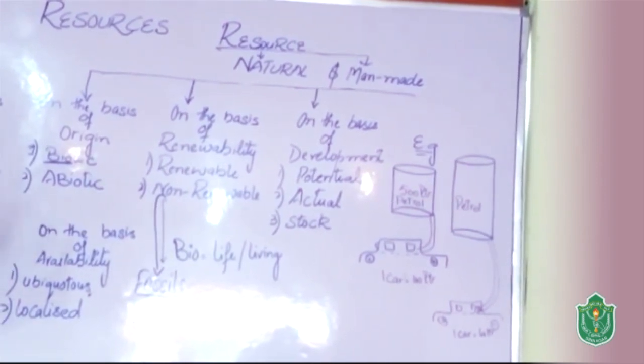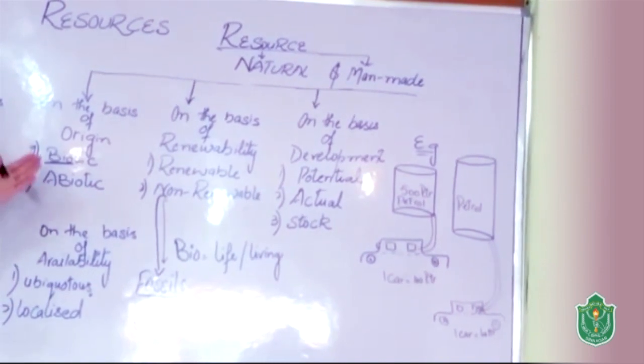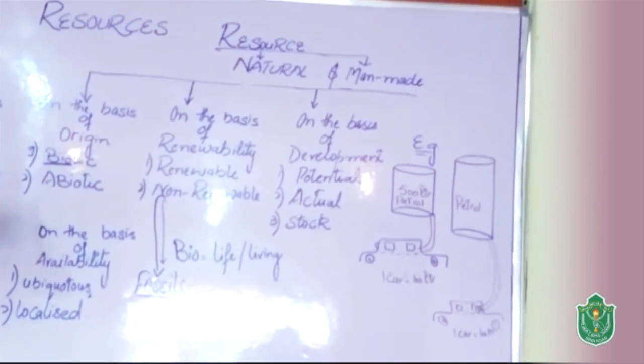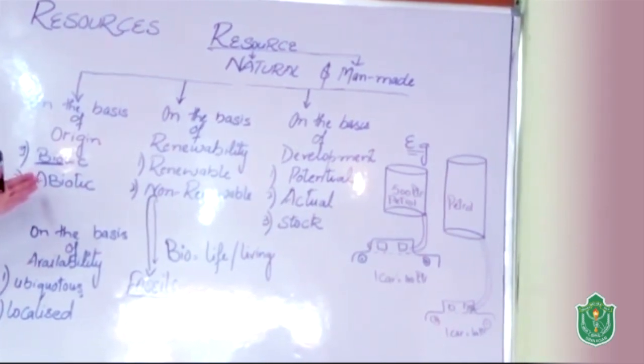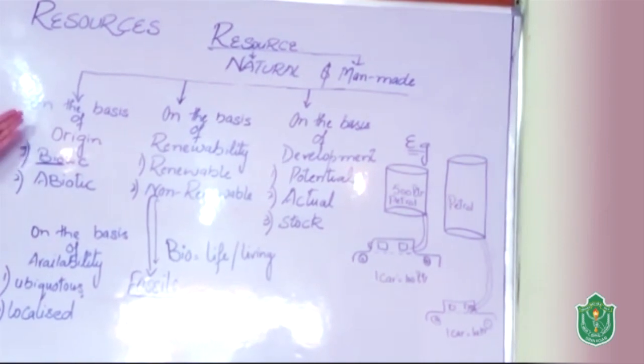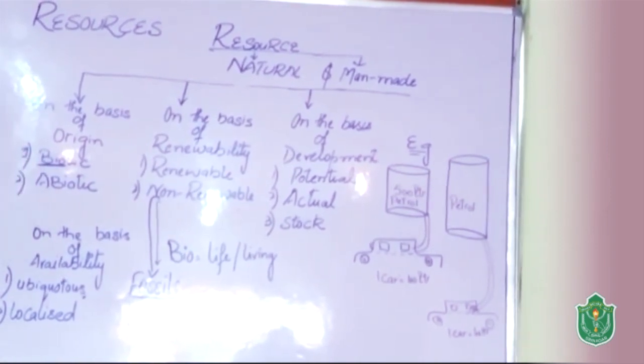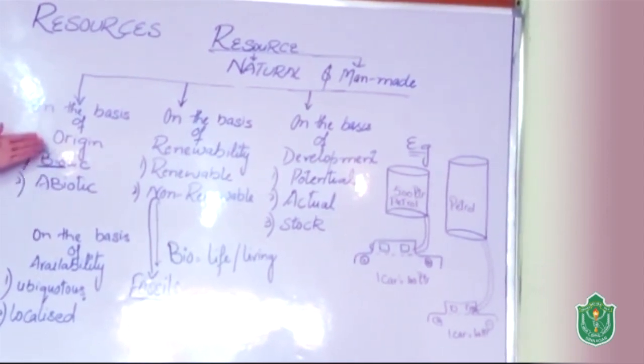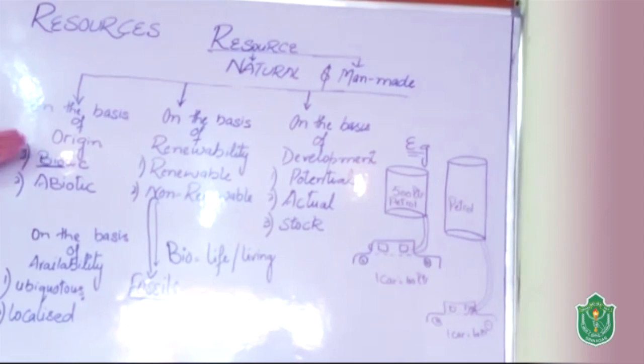Natural resources are broadly classified into different things. We will analyze these. First thing, on the basis of origin, the natural resource can be classified into two types.